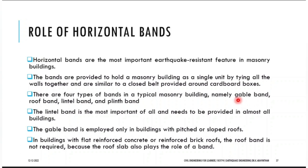The gable band is provided for gabled roofs — a tapered roof where the slope is on both sides. If you have that kind of roof, you use the gabled band. The roof band is for a flat roof with no slope. If there is no slope, you use roof band, lintel band, and plinth band. For a sloped roof, you use the gabled band.